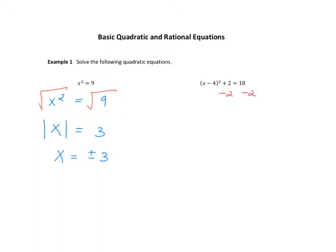So the only real difference is you might have to do a bit of setup work before you get to the stage of taking the square root. If you subtract 2, you get (x - 4)² and on the other side you get 16.